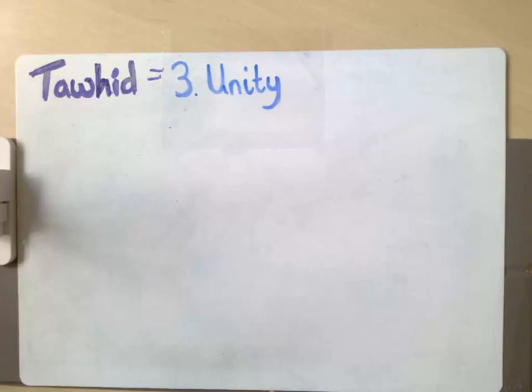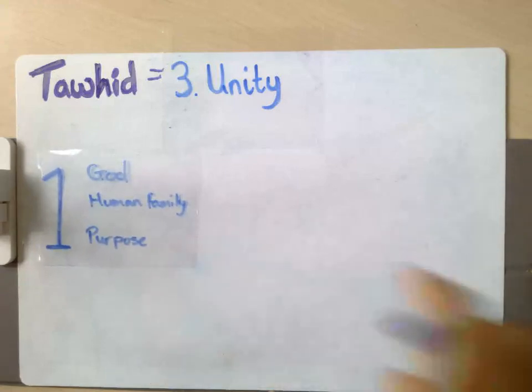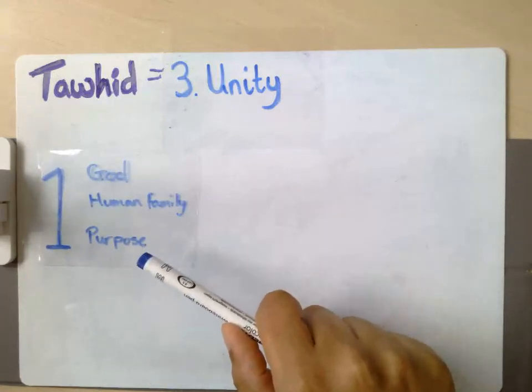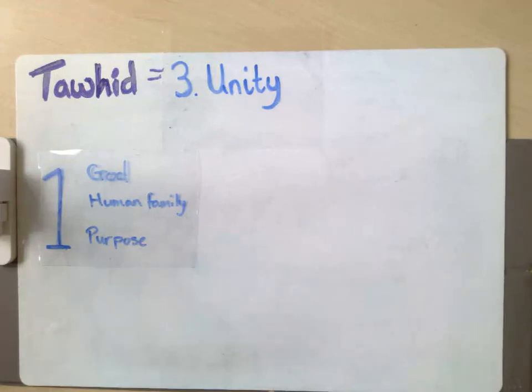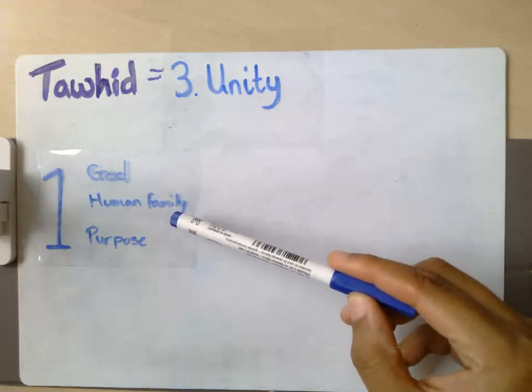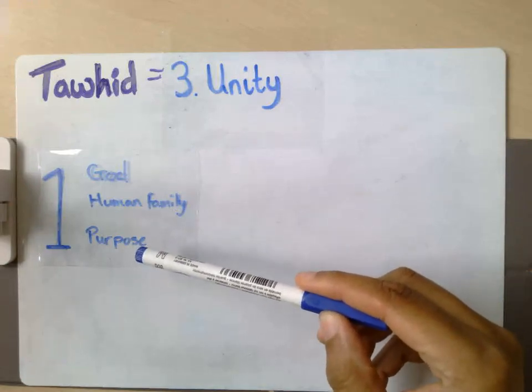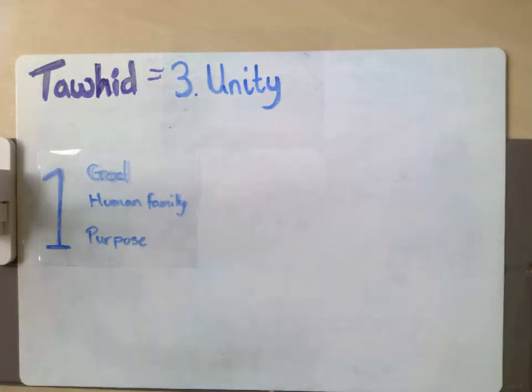So finally, the concept of unity within Tawhid means that Muslims believe there is only one God who created one human family for one purpose. So one God, one human family, and one purpose. And that purpose is essentially to be united with God. So the only God which exists has created one human family, the human race. And all of those humans as individuals have the same one purpose.